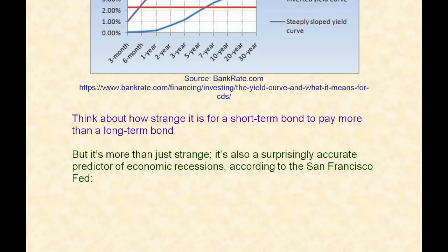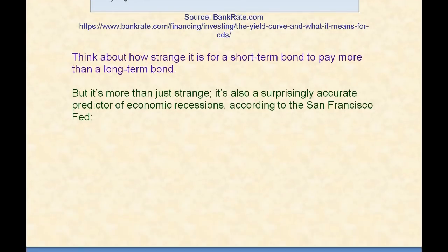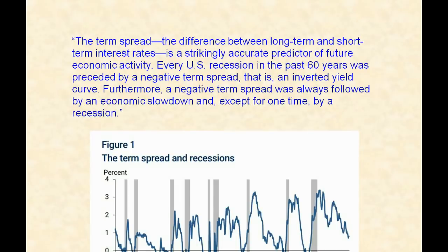But it's more than just strange — it's also a surprisingly accurate predictor of economic recessions. Inverted yield curves have been an accurate predictor of economic recessions, at least according to the San Francisco Fed. The term spread — the difference between long-term and short-term interest rates — is a strikingly accurate predictor of future economic activity. Every U.S. recession in the past 60 years was preceded by a negative term spread, or in other words, an inverted yield curve. Furthermore, a negative term spread was always followed by an economic slowdown and, except for one time, was followed by a recession.